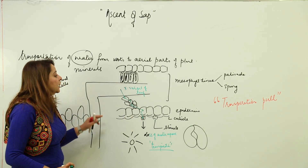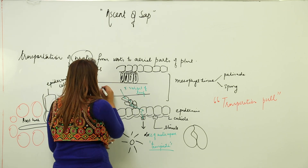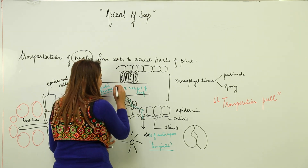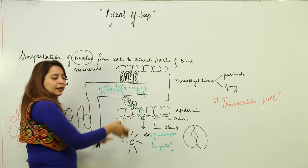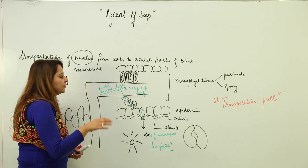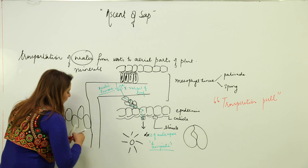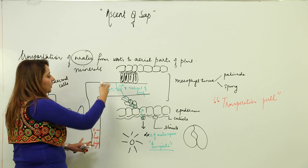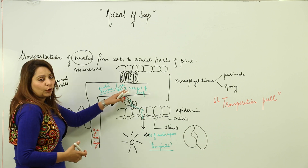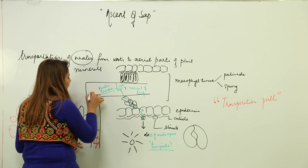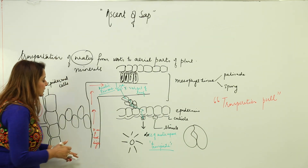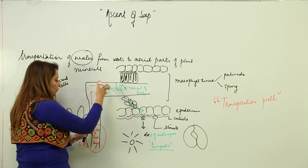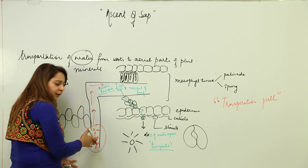Water moves from the xylem vessel of the leaf to the spongy cells, to the epidermal cells, and is evaporated through the stomata into the atmosphere. As a result, the water pressure in the xylem vessel of the leaf falls. Meanwhile, the water pressure in the xylem vessel of the root is still high, so water moves from the higher concentration in the root to the lower concentration in the leaf.